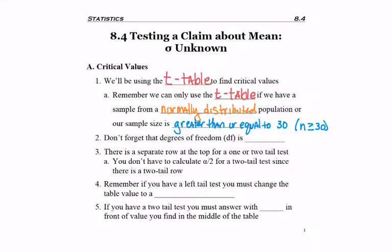Since we will be using the t-table, don't forget that for degrees of freedom, we use n minus 1, the sample size minus 1.